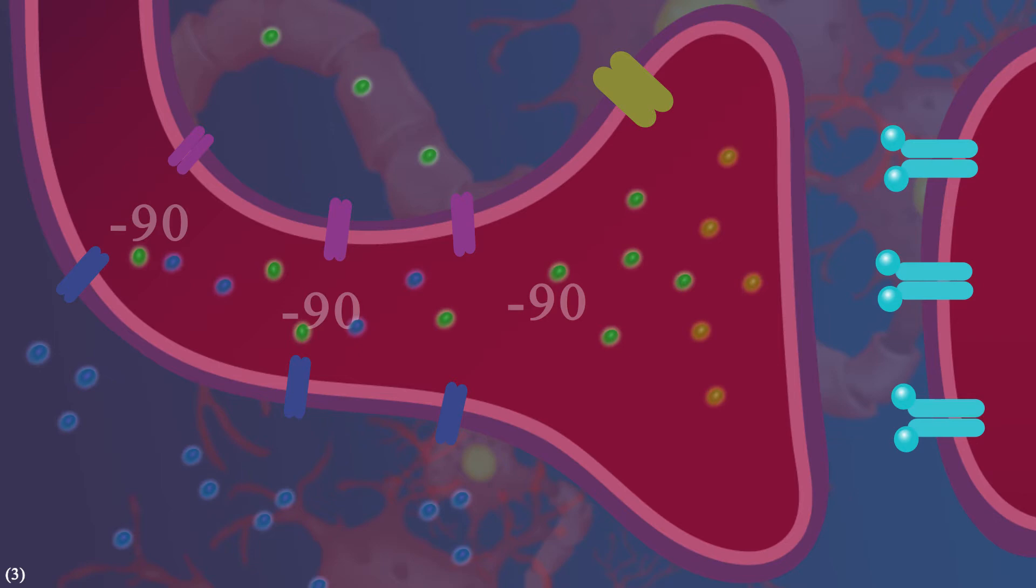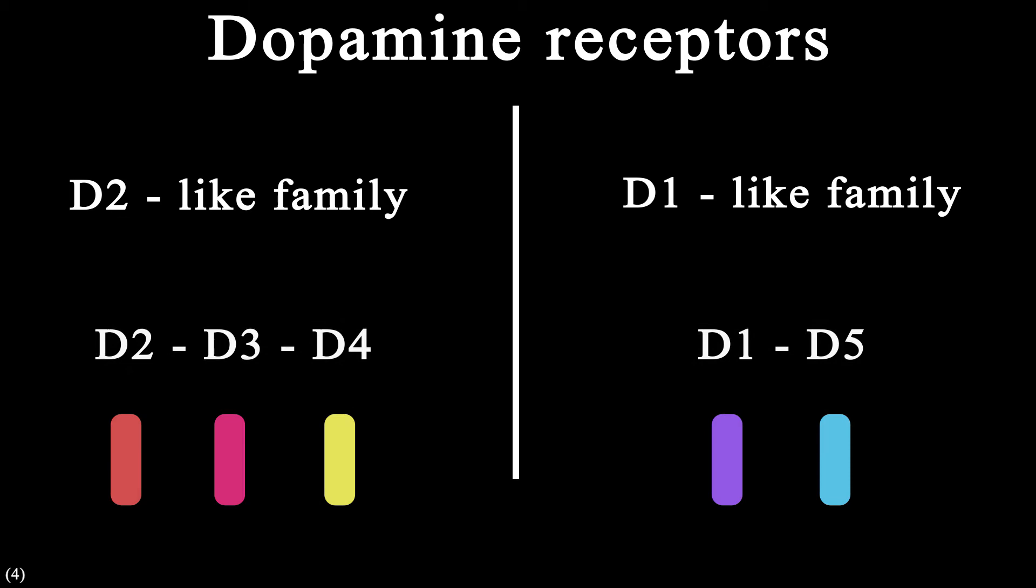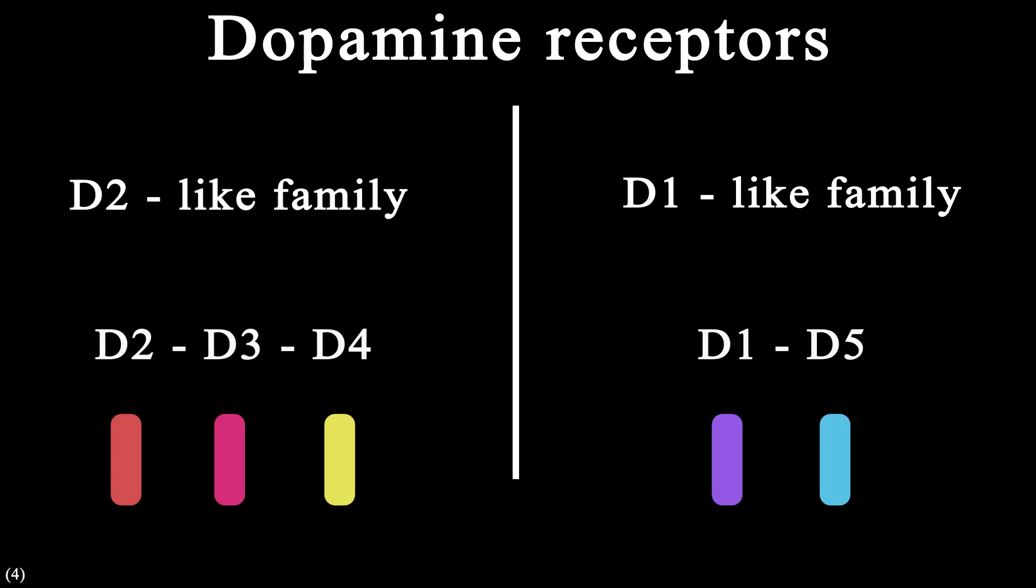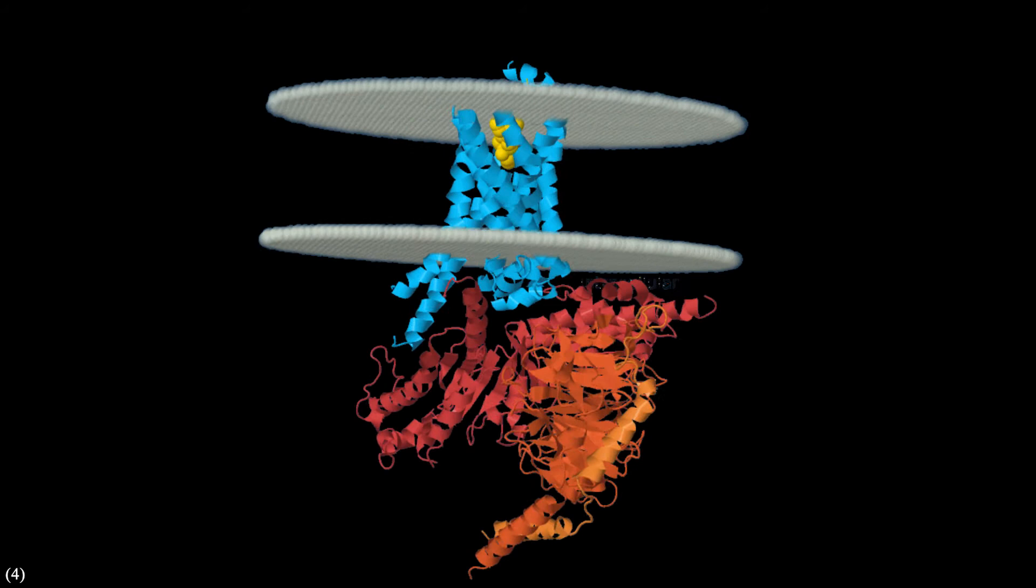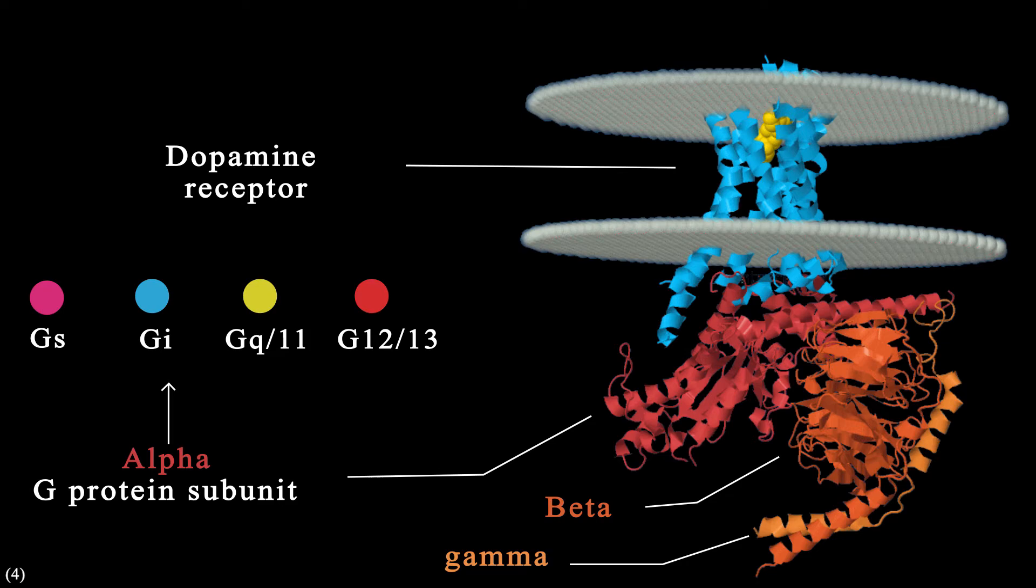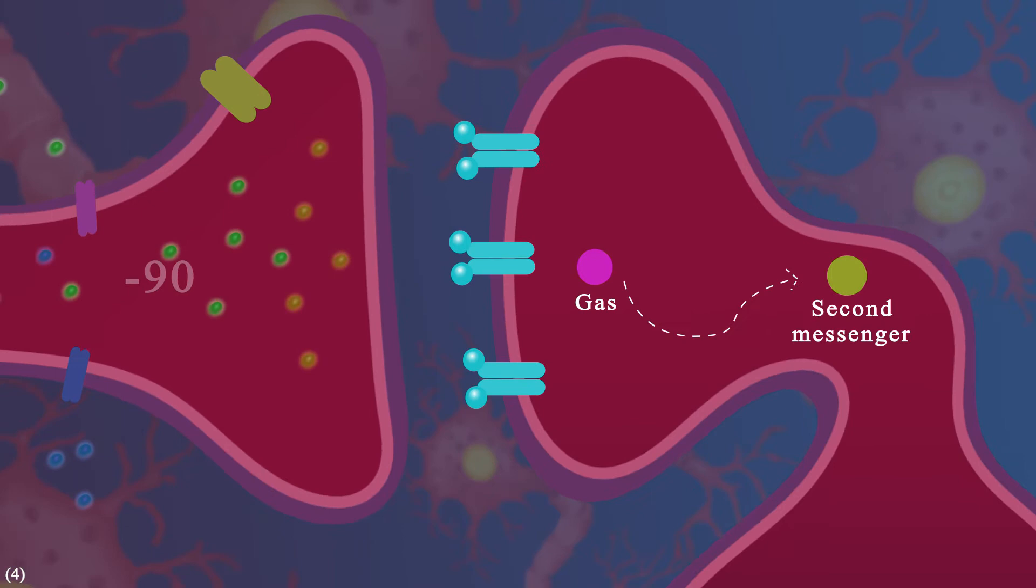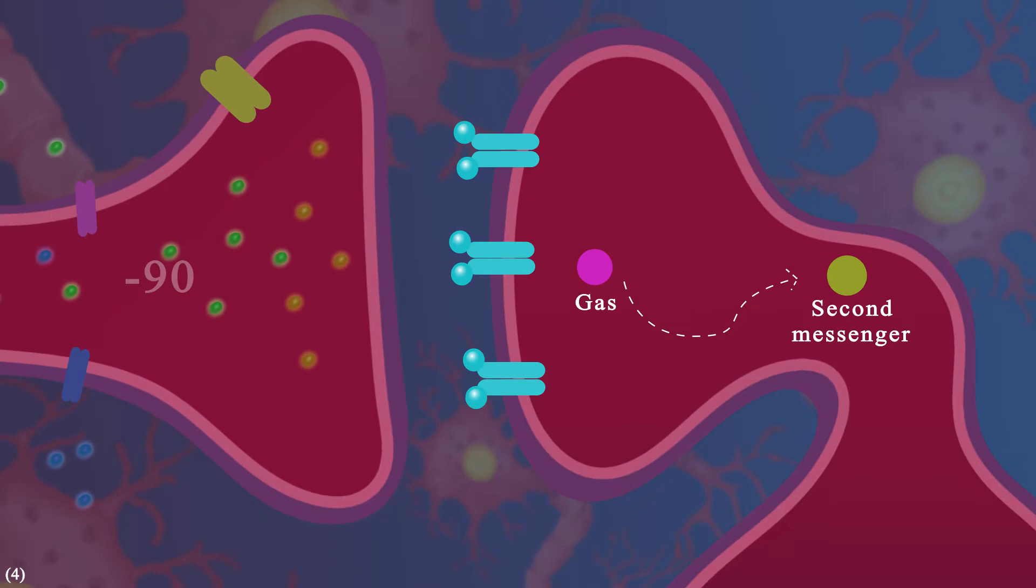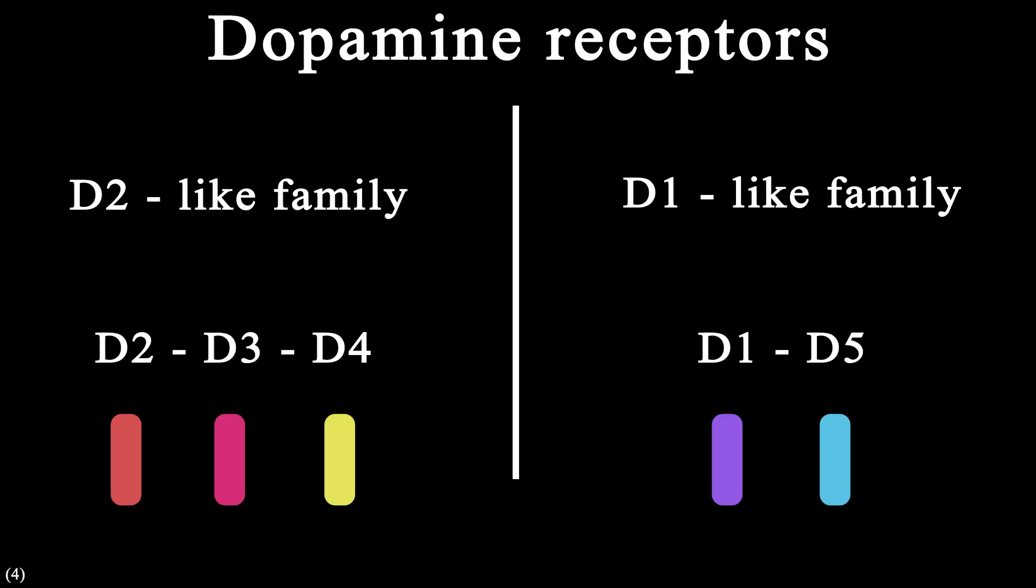This is where things start to get more complicated, because in contrast to what most people think, dopamine doesn't always excite the postsynaptic neurons. Dopamine has two different family receptors: D1-like family receptors and D2-like family receptors. These receptors are what we call the G-protein coupled receptors. They are proteins inside of the cell membrane and they connect to three subtypes inside the cell. One of them is alpha. There are four types of alpha and they can start different intracellular signaling pathways, which at the end, they increase or decrease a molecule called the second messenger. This second messenger can start a series of reactions that change the gene expression of the postsynaptic neurons.